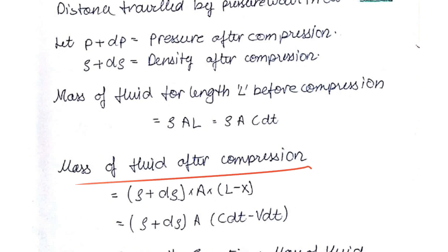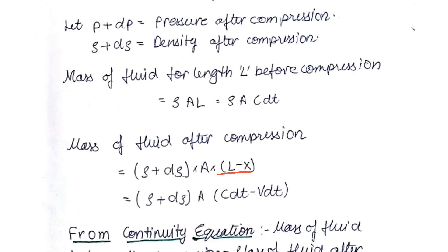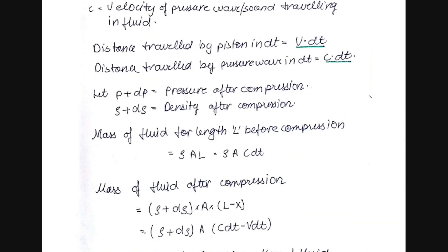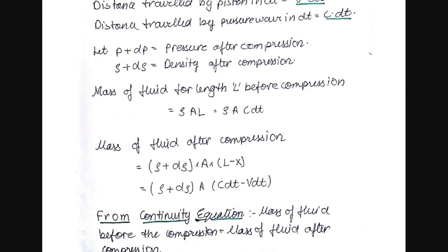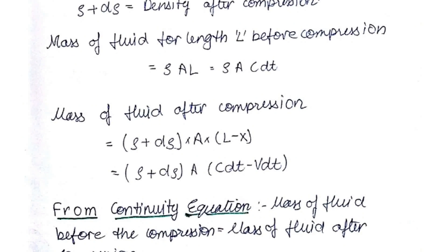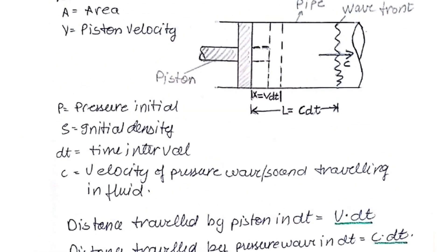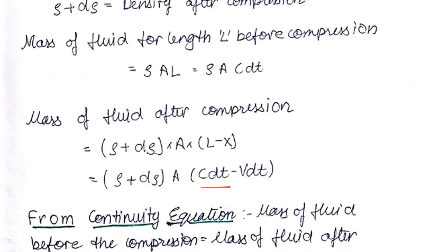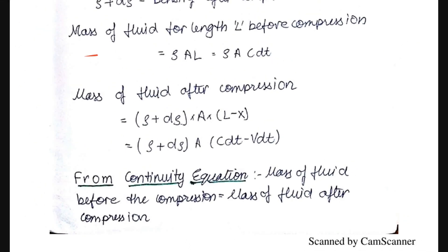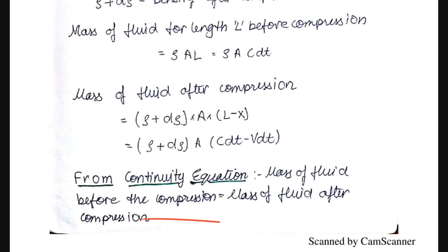The mass of fluid after compression equals (rho + d·rho) · A · (l − x), because the piston has moved a distance x into the fluid. Replacing l = c · dt and x = v · dt, we apply the continuity equation: the mass before compression equals the mass after compression. We equate these two expressions and cancel the common factors of area A and time dt.